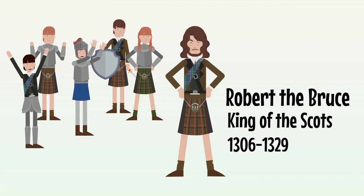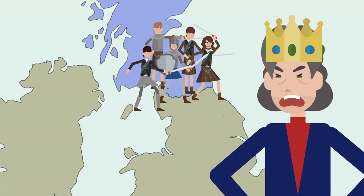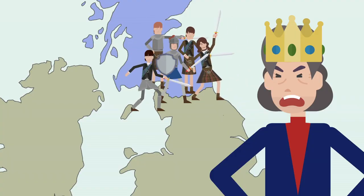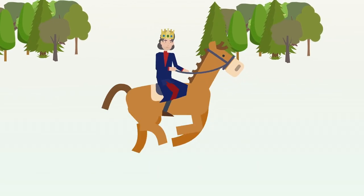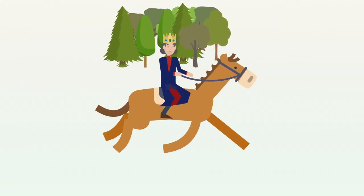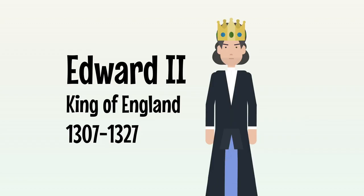Robert the Bruce would prove a formidable enemy and harried the English on the Scottish border. Edward I, the Hammer of the Scots, was forced once more to set off north with his army. But before he reached the battlefront, the 68-year-old king died. His body was carried back to Westminster Abbey, where he was buried. His 23-year-old son, who we'll cover in our next video, was crowned King Edward II later that year.